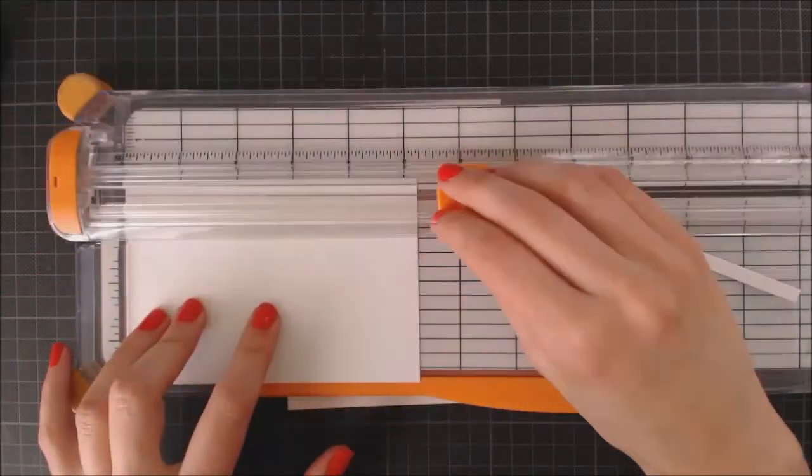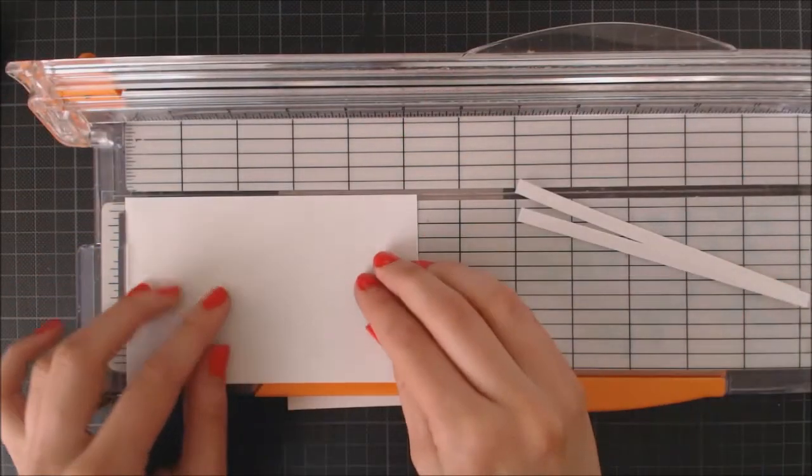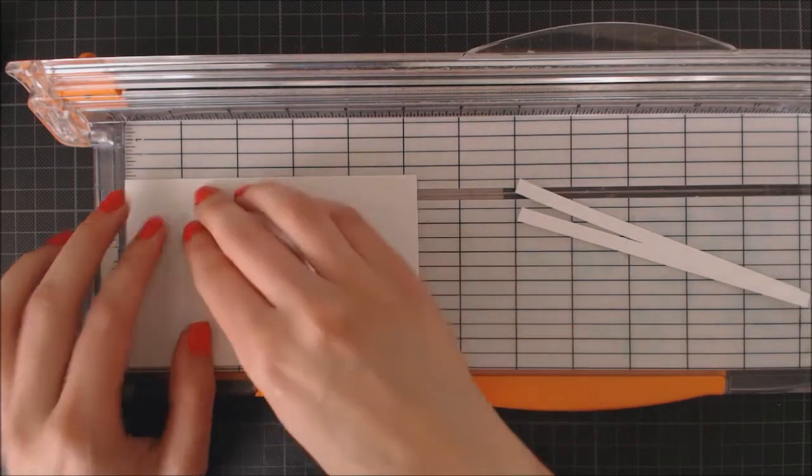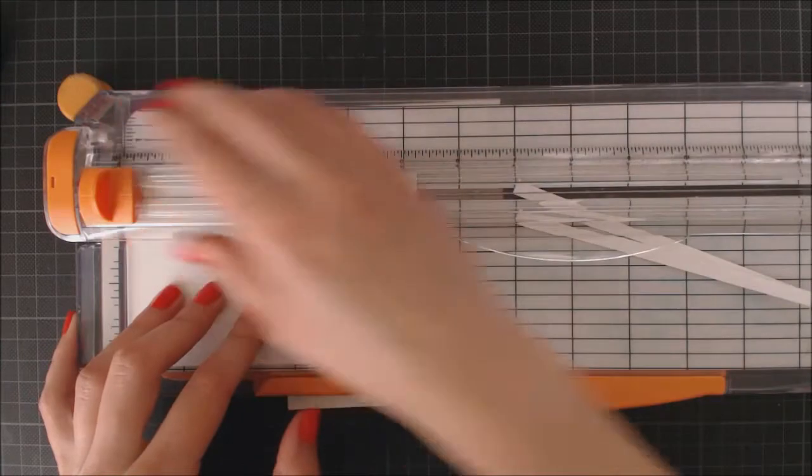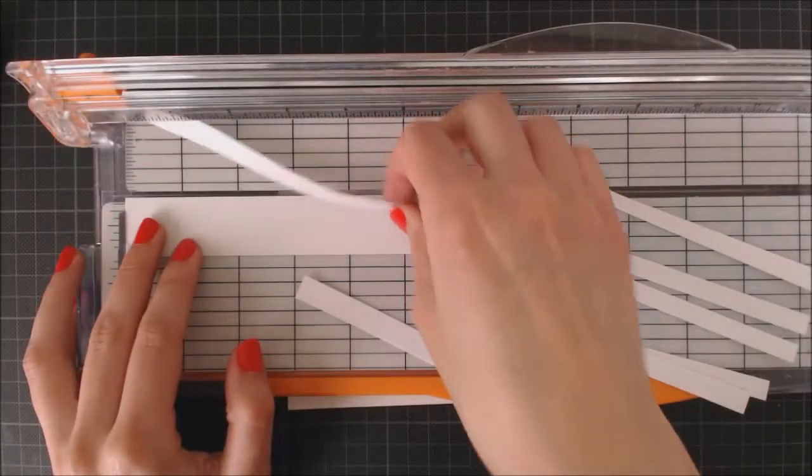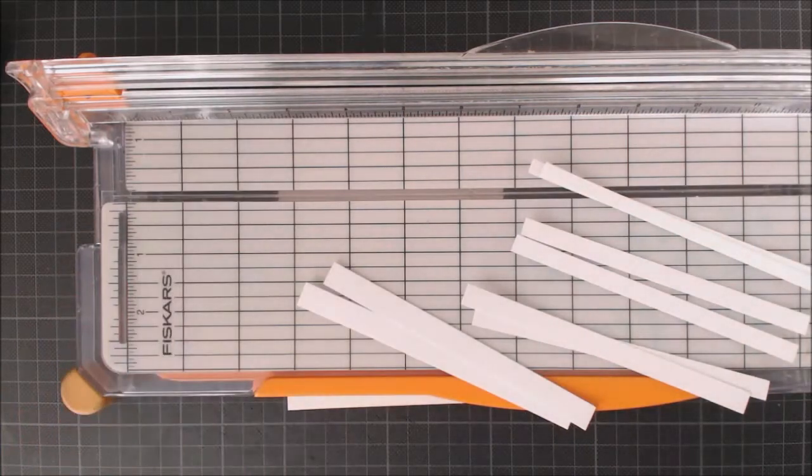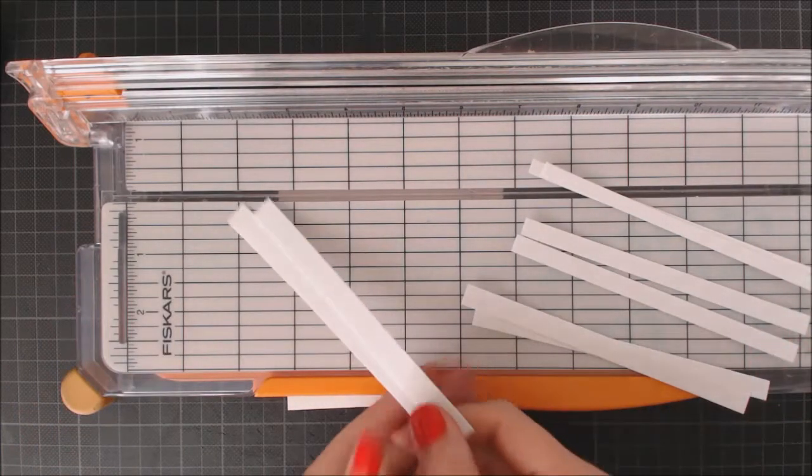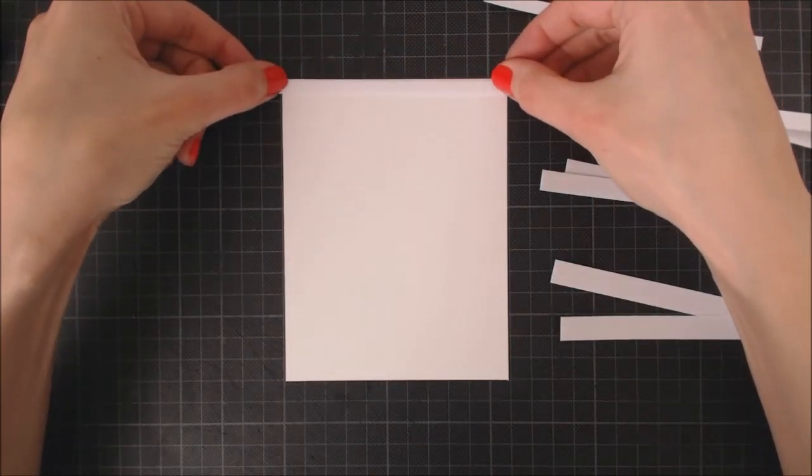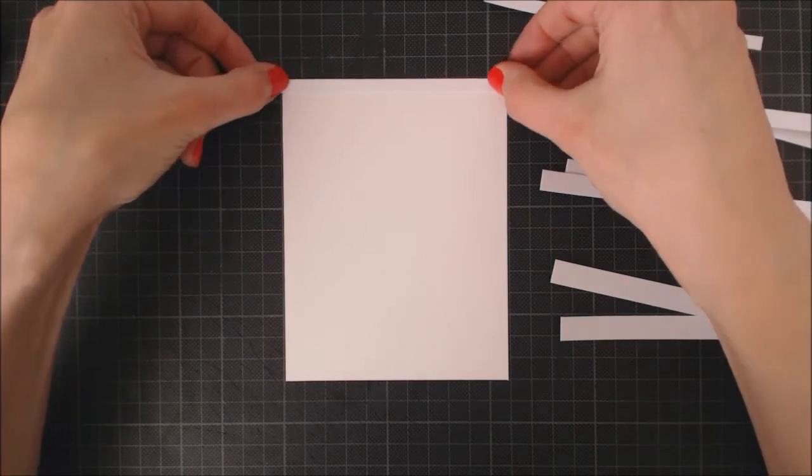So now I'm going to go ahead and create a striped background for my card using masking paper and distress inks. Here I have a piece of masking paper and I'm cutting stripes out of it. My first one is a quarter inch tall, and I'm going to cut two of each size and then make the next one a sixteenth inch taller. So here I have all my stripes ordered by size, the thinner ones are on top.